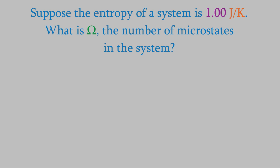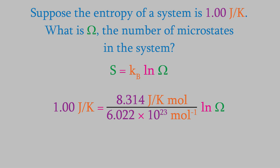For example, suppose we wanted to estimate the number of microstates in an ensemble if the entropy is 1 joule per kelvin. We can plug that value of the entropy into Boltzmann's equation. To find the number of microstates, we need the value of the gas law constant and Avogadro's number. That gives us an equation where the logarithm of omega equals 7.243 times 10 to the 22nd power. To calculate omega, we must raise e to this power — a number so huge that most calculators can't calculate it; it might as well be infinite.